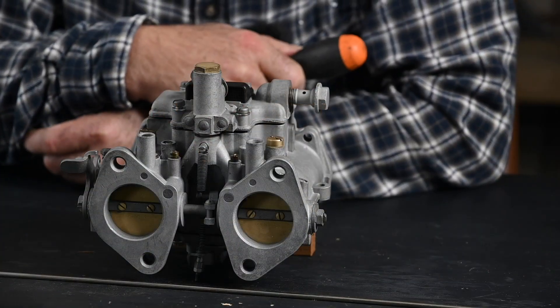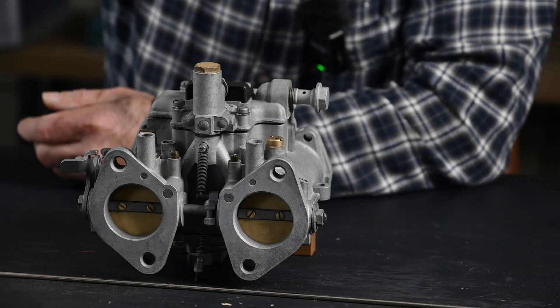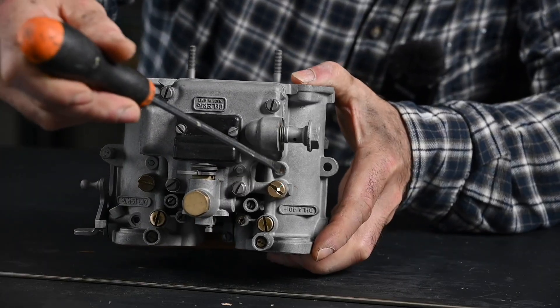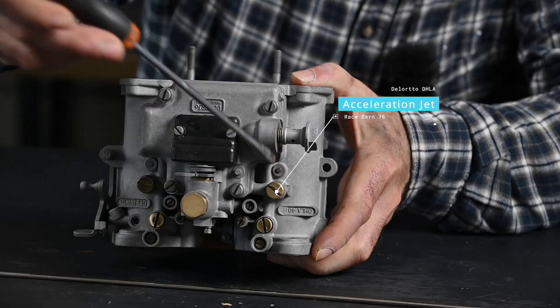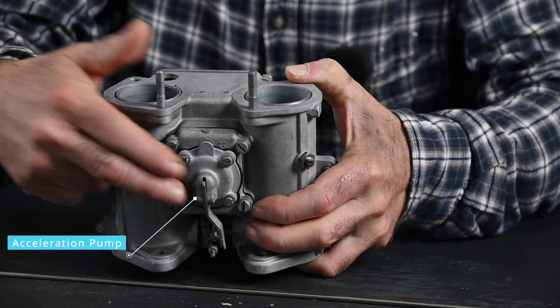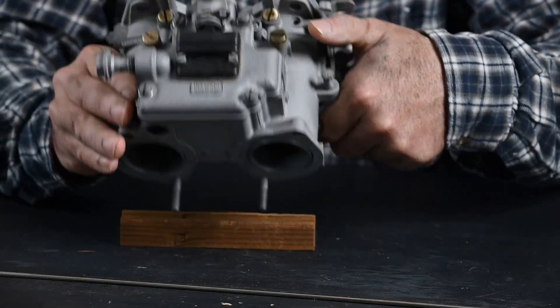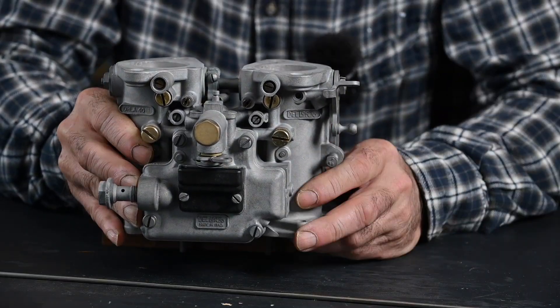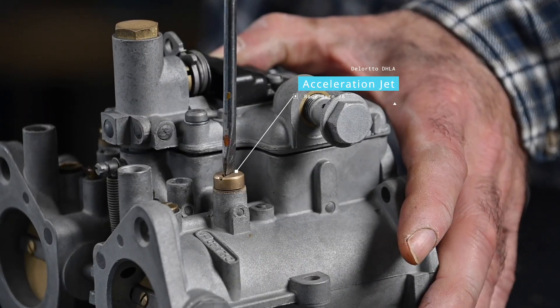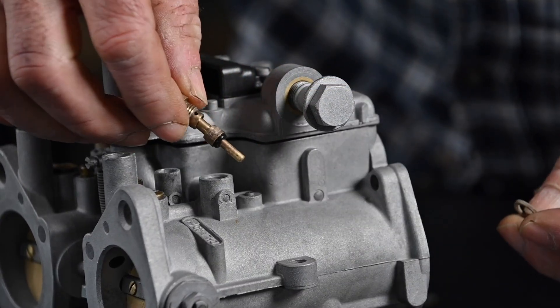So here we have the carburetor. Inside behind the butterfly you actually have the accelerating jet sticking through the barrel. The acceleration jet we have access from the top. Flip this over, you see this screw right here, we can remove this and there's one for each barrel. Inside we have the acceleration jet and we'll do that in a second. In the back we have what we call the acceleration pump, based on a membrane and the lever that's going to push the membrane in.